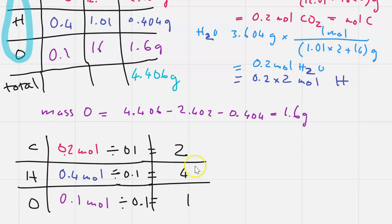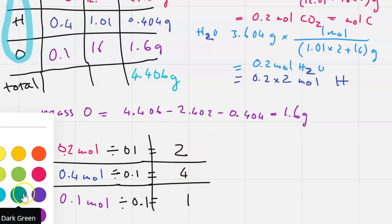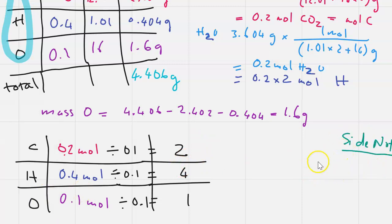So a little side note here: one half is 0.5, so if you have something that the decimal ends up with 0.5, you will multiply all the number with 2 in order to get whole numbers. If you get something that is like 0.33, you will multiply with 3 because that's one third.